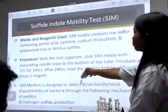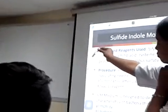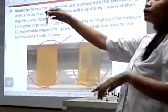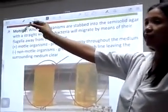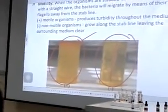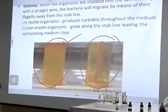SIM — what will you read first in SIM before you add your Kovacs? You read for motility. Motility is seen as turbidity. Did you see the growth spreading beyond the stab line? It will diffuse into the medium. For a negative result, you will only see the growth of the organism in the stab line, and the sides will remain clear.